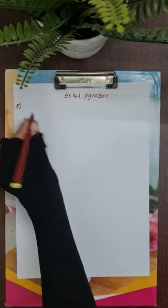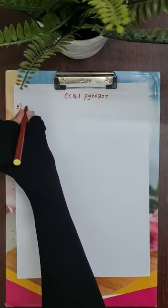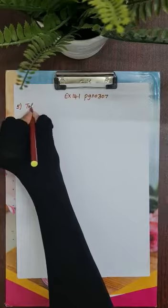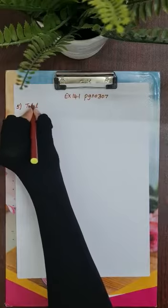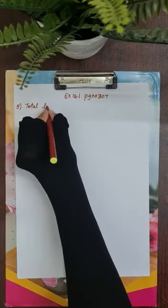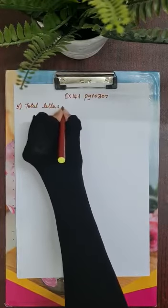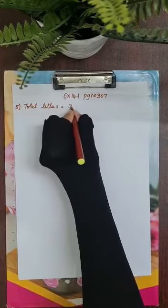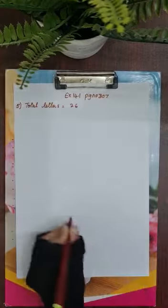Now the fifth one: a letter is chosen from the English alphabet. Find the probability of the letters being — there are four parts, children. Now, letters of the English alphabet — how many total letters do we have? The total letters are 26, A to Z.